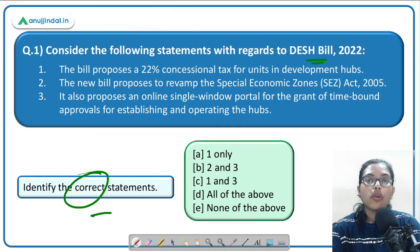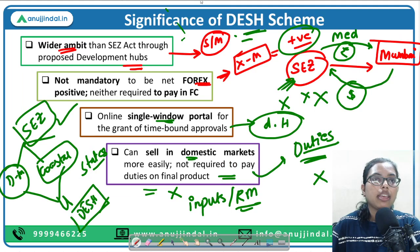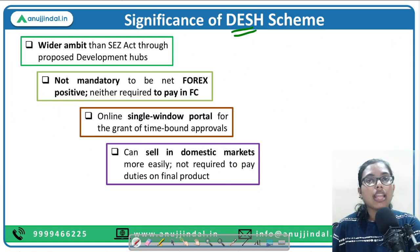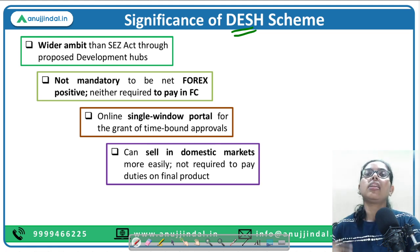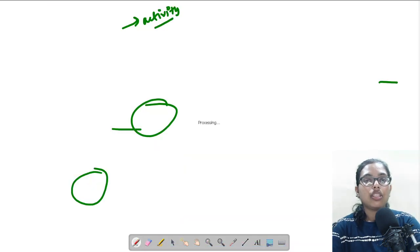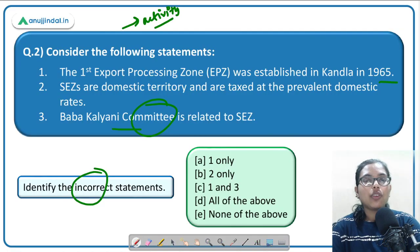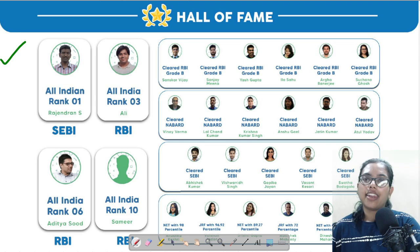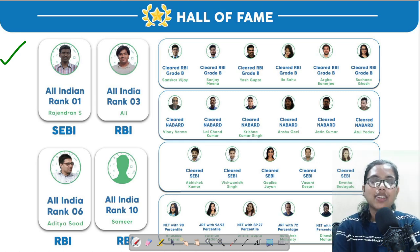Second question: identify the incorrect statements. The statements are: (1) the first export processing zone was established in Kandla in 1965; (2) SEZs are domestic territory and are taxed at prevalent domestic rates; (3) Baba Kalyani Committee is related to SEZ. Remember, whenever you see a committee in a question, note the name and the objective. This will also help in RBI interviews. Answers and a free PDF of this session have been uploaded to the Telegram group. Take care and bye!